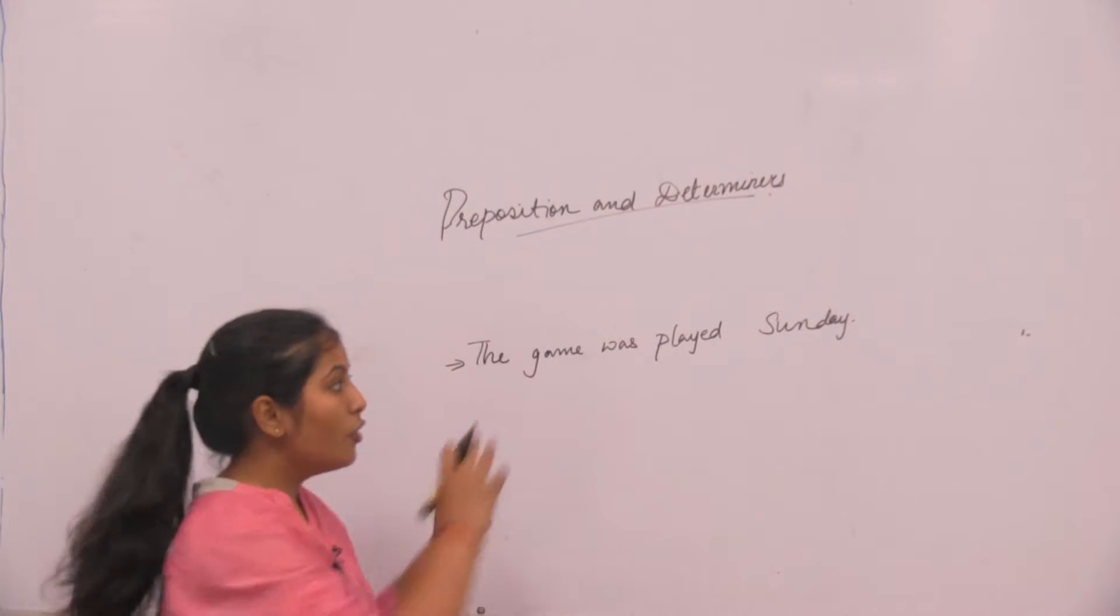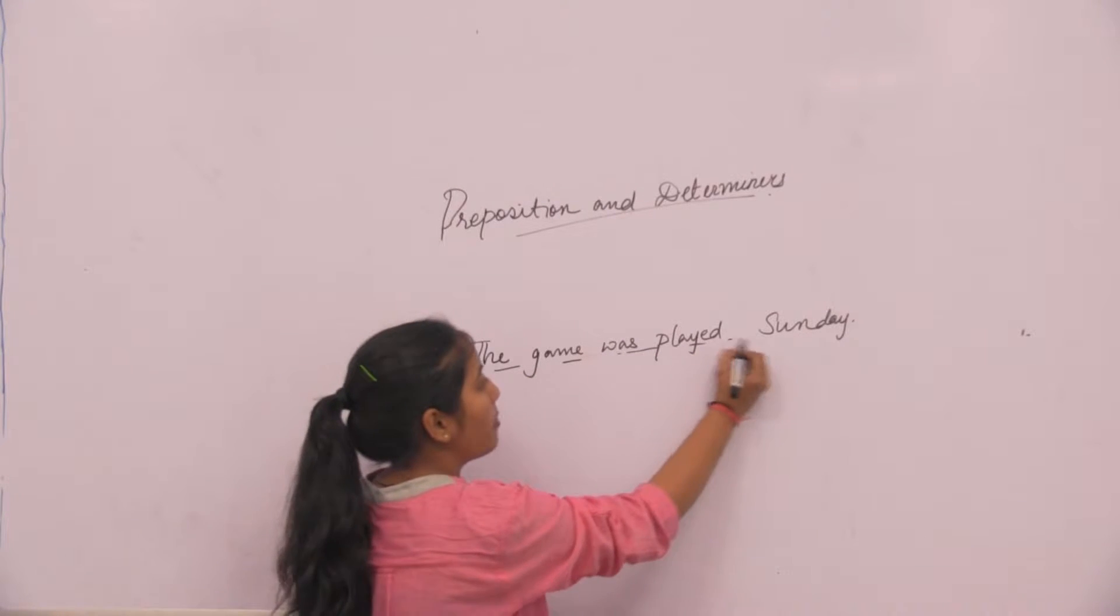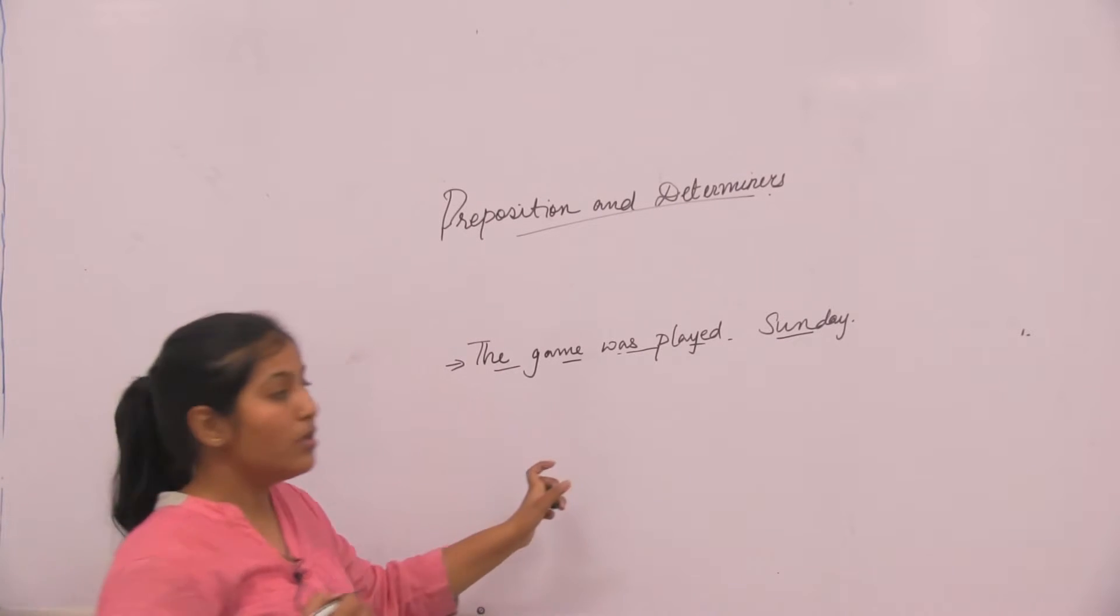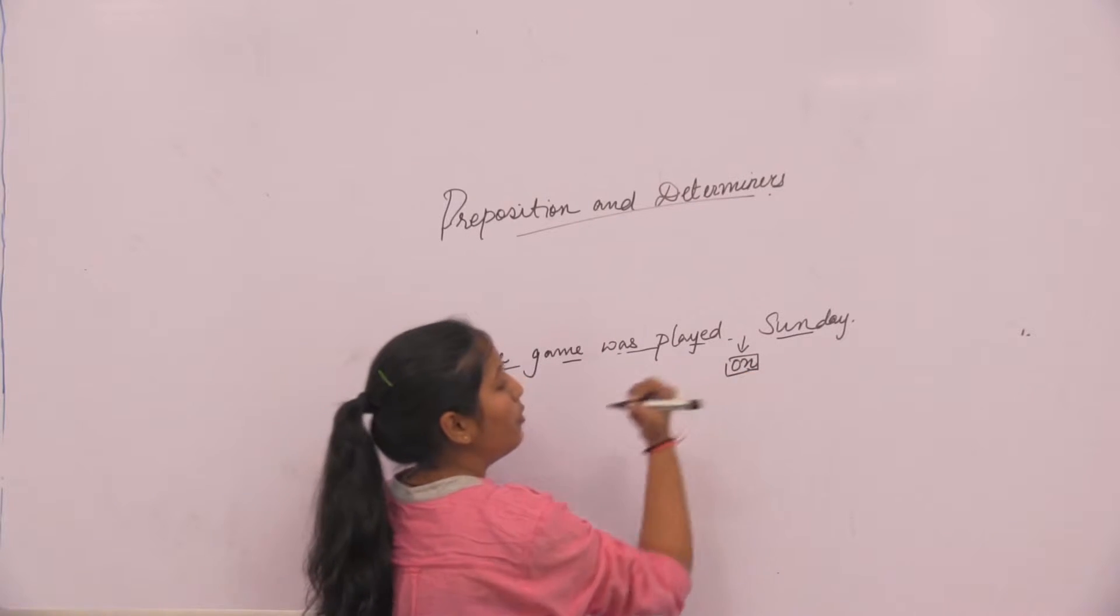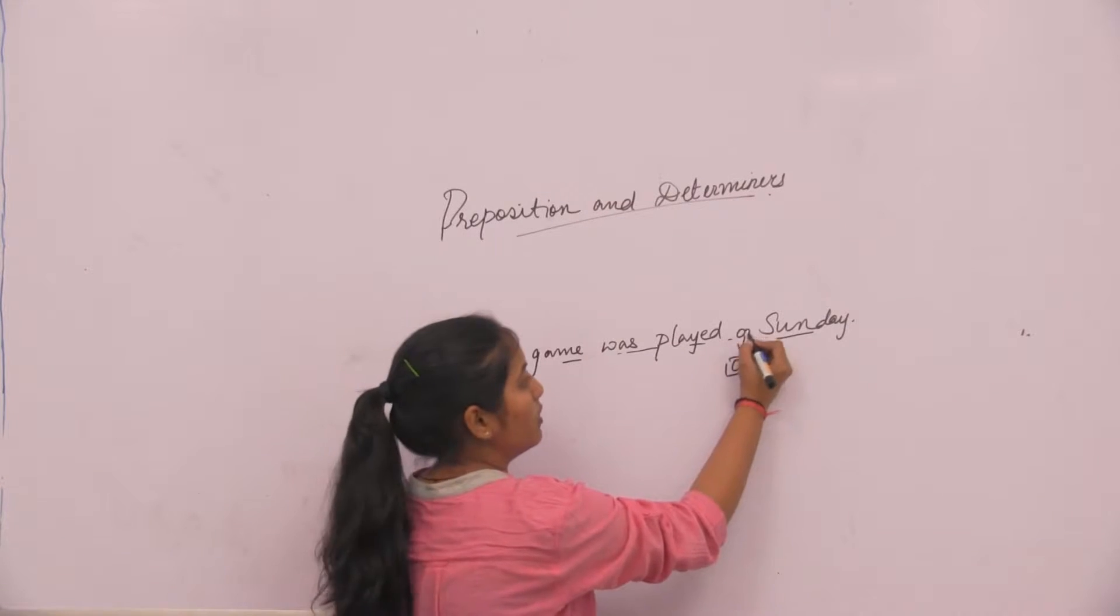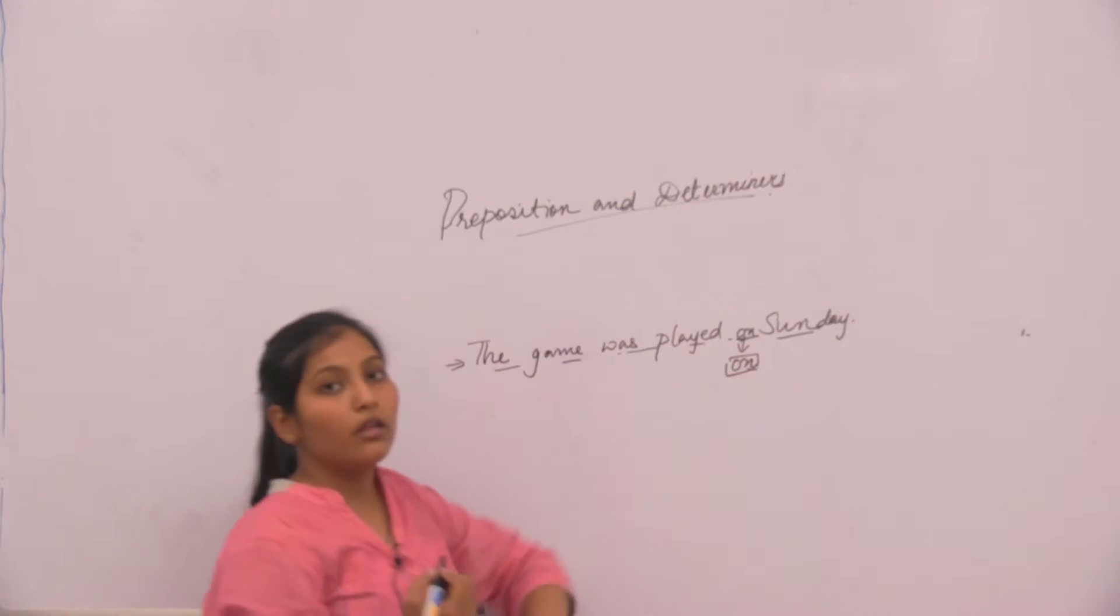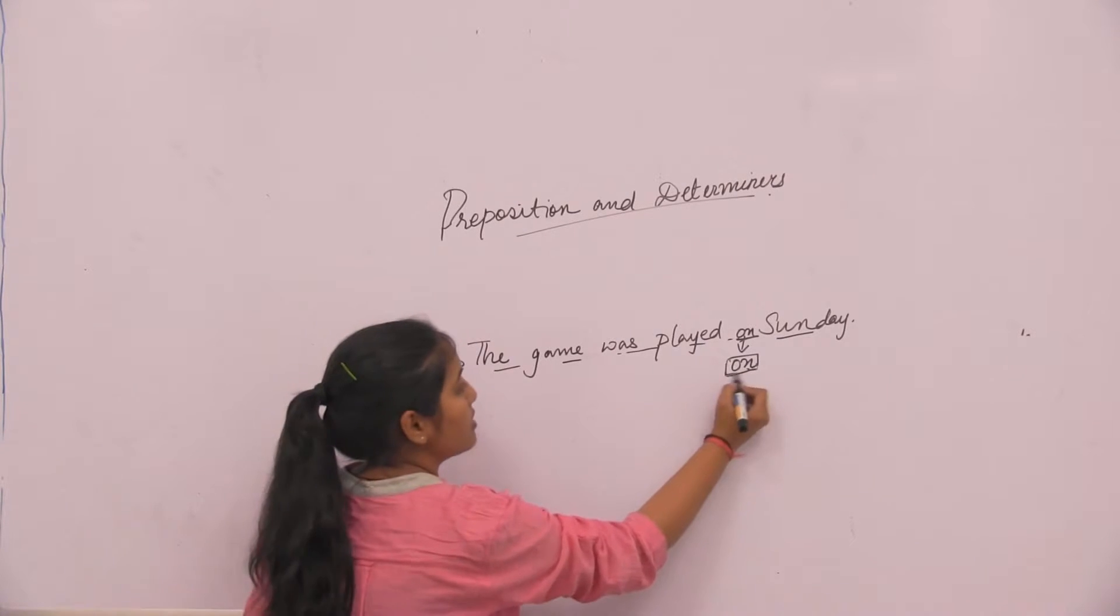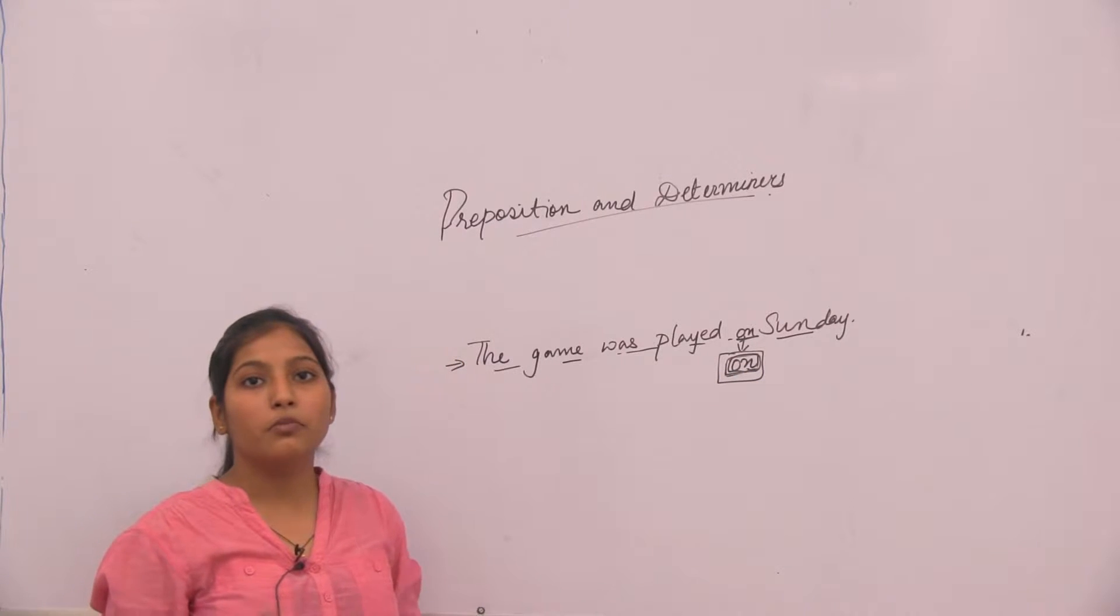We use prepositions to connect between two words. The game was played Sunday - this is not connecting with each other. Now when I put on between these two words, the sentence becomes the game was played on Sunday. Now this sentence is complete. This on is a preposition.